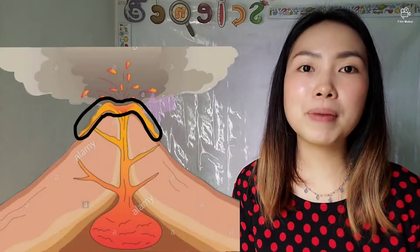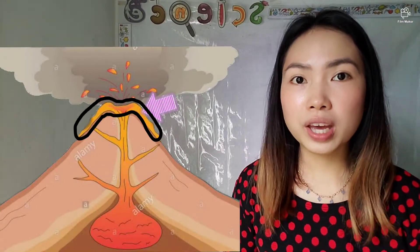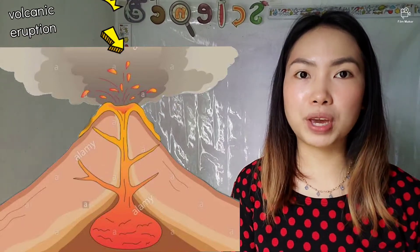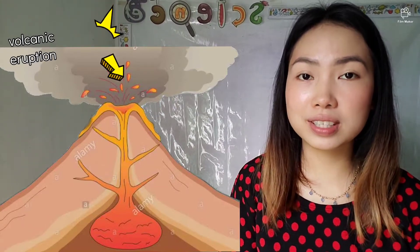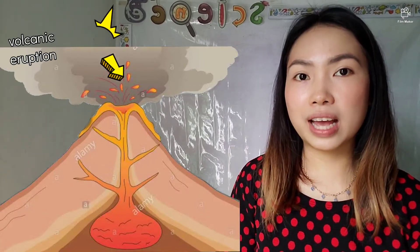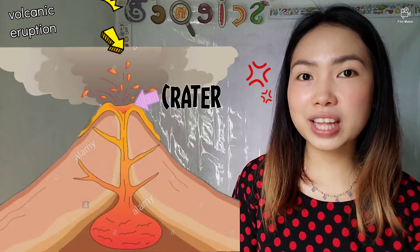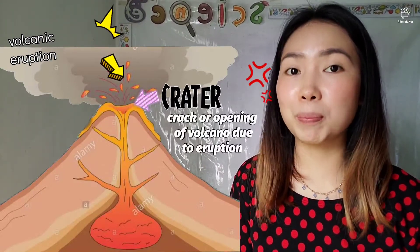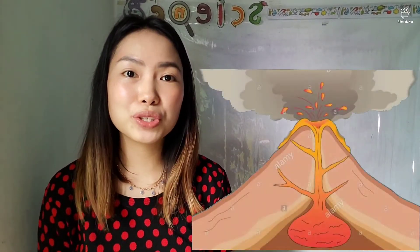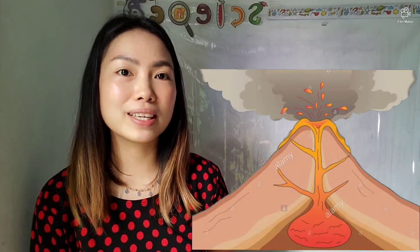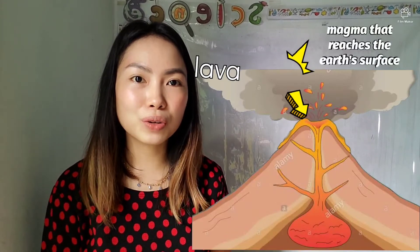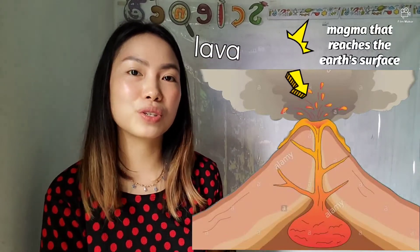Since the magma now reaches the opening of the volcano, it will lead to volcanic eruption. Volcanic eruption may cause a crack on its surface, and this is now called a crater. Crater is also an opening of the volcano, but it is caused by volcanic eruption. Since the magma reaches the earth's surface, it will no longer be called magma but is now called lava, and this lava will flow out to the earth's surface.